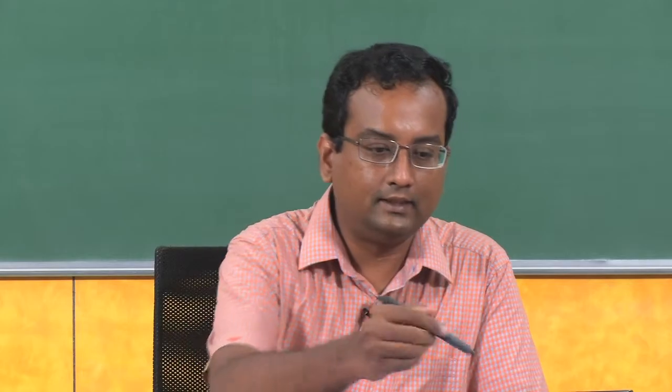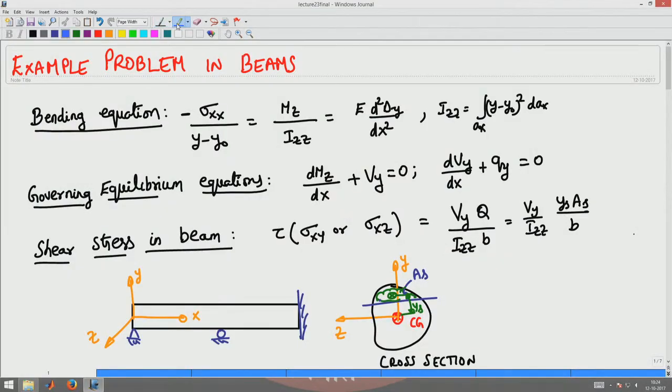Welcome to the 23rd lecture in Mechanics of Materials. In the previous three lectures we looked at the bending equation: minus sigma_xx by y minus y_naught is equal to Mx by Izz equal to E by R. We looked at this equation and its derivation, where Izz was the integral of (y minus y_naught) squared over the cross-sectional area.